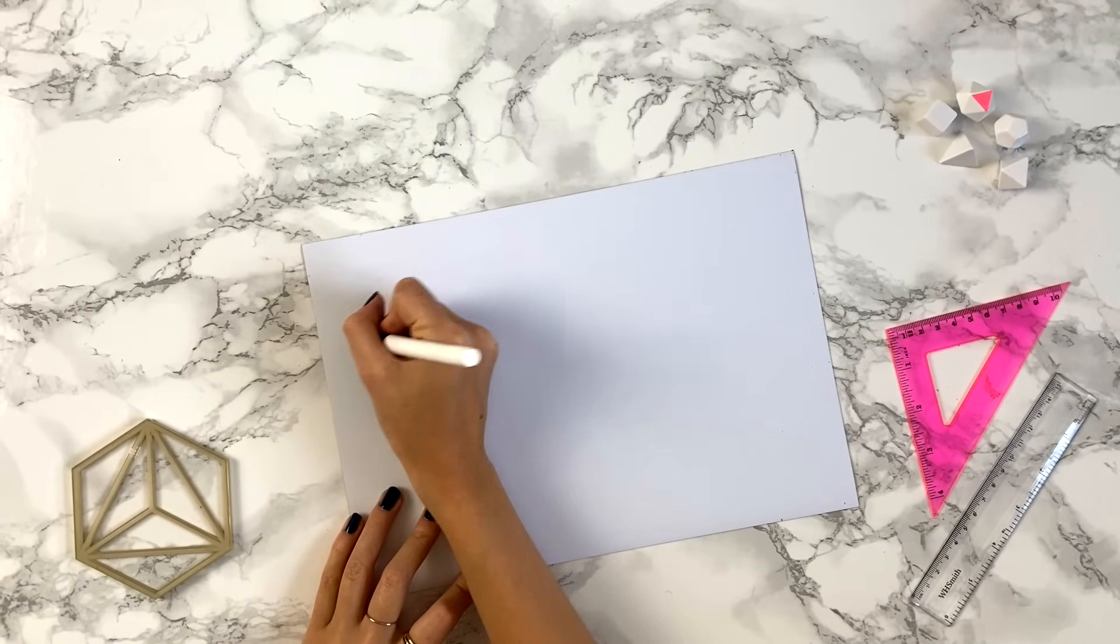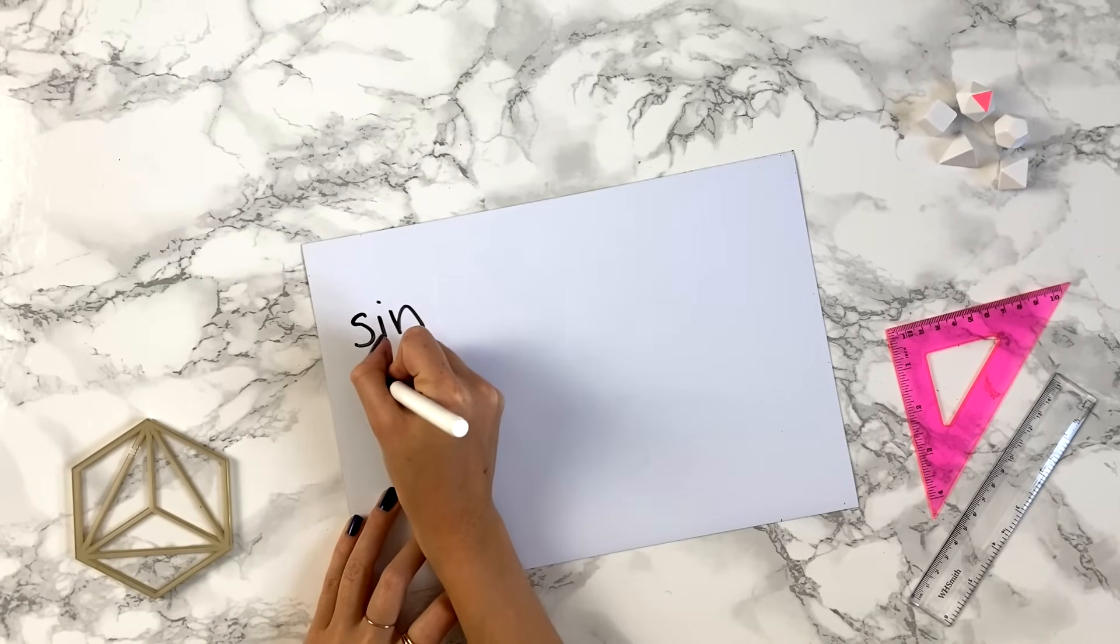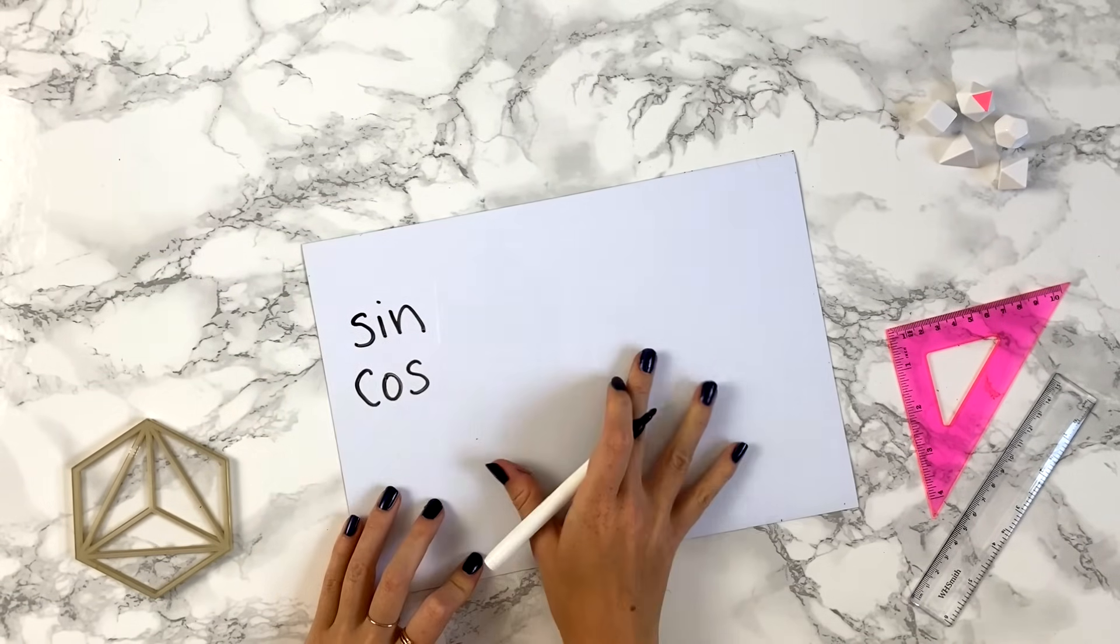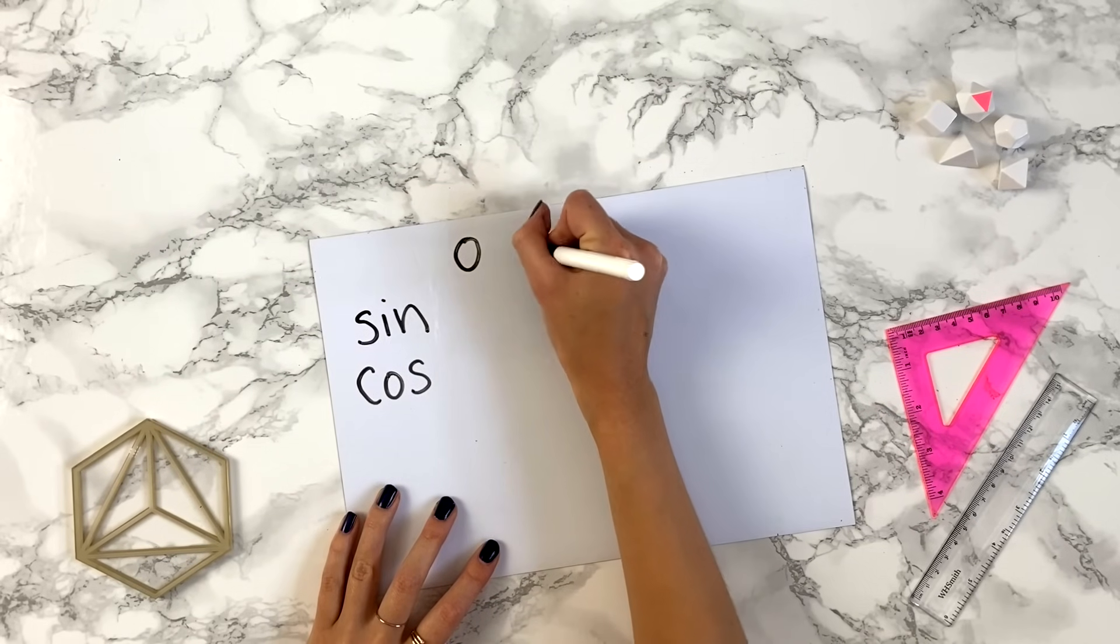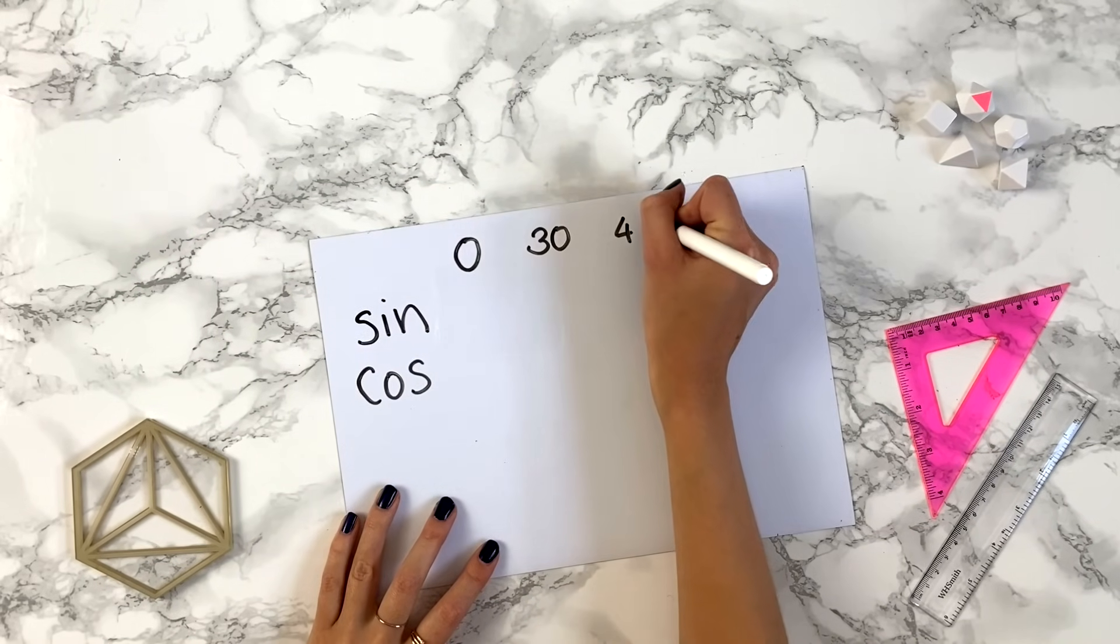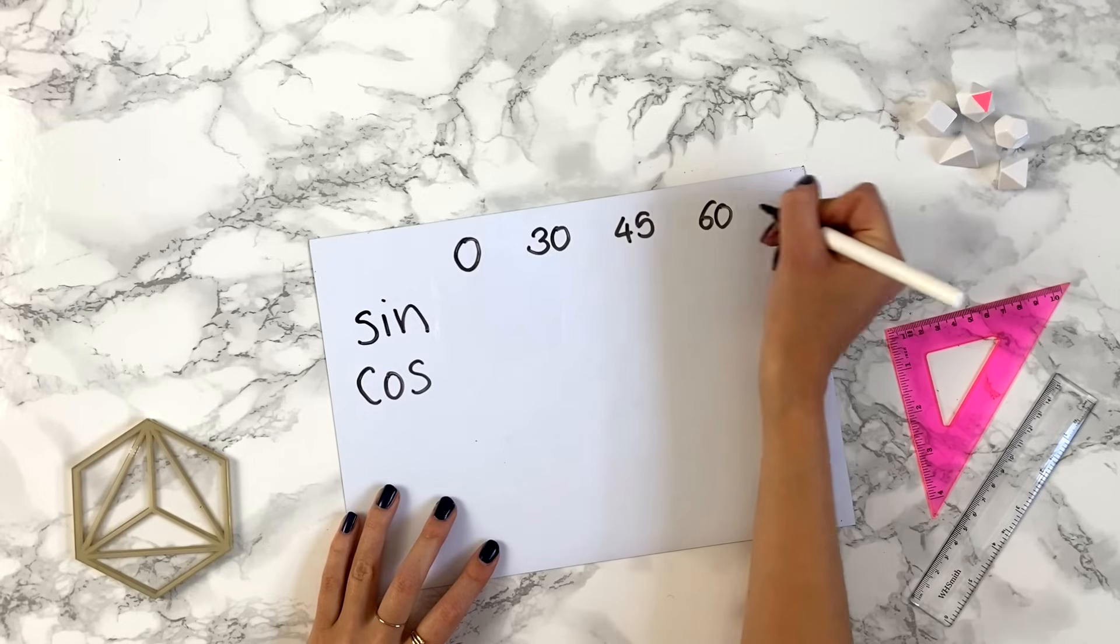You start off by writing sine and cos at the side like this, then at the top you write 0, 30, 45, 60, and 90.